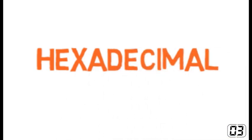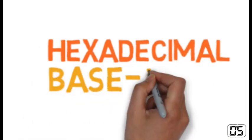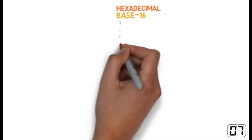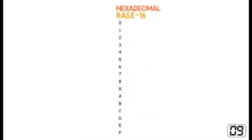First off we need to know that hexadecimal is a base 16 counting system. This means we use 16 symbols, 0 to 9 and then A to F.